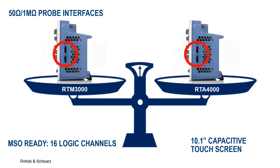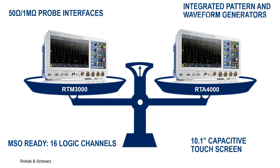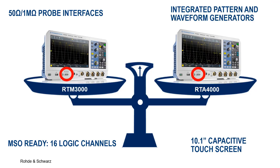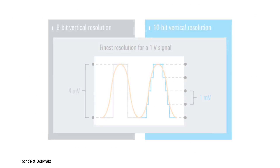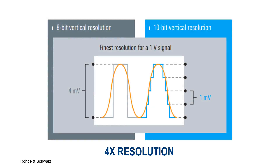They also feature the same optional integrated pattern and waveform generators, the same 5 gigasample per second sample rate and trigger options, and with 10-bit analog to digital converters and MSO capabilities, both can display multiple time-aligned analog and digital waveforms with 4 times the resolution as those produced by traditional 8-bit ADC converters.